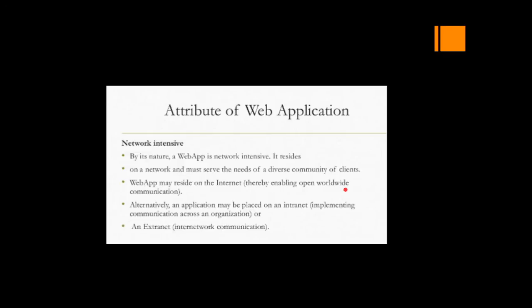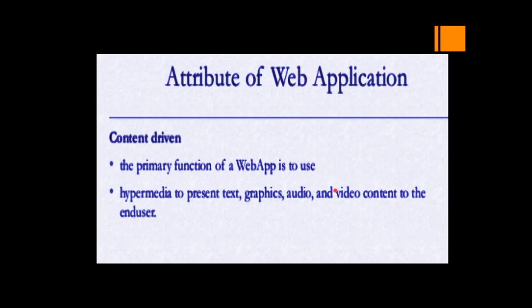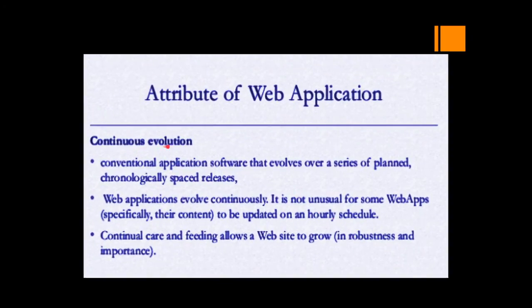The next attribute is content driven. The primary function of a web app is to use hypermedia to present text, graphics, audio, and video content to the end user. Hypermedia is the combination of all types of media. The web application should be able to use text, graphics, audio, or video based on the necessity of the particular application — it should be content driven with a mix of different media types.